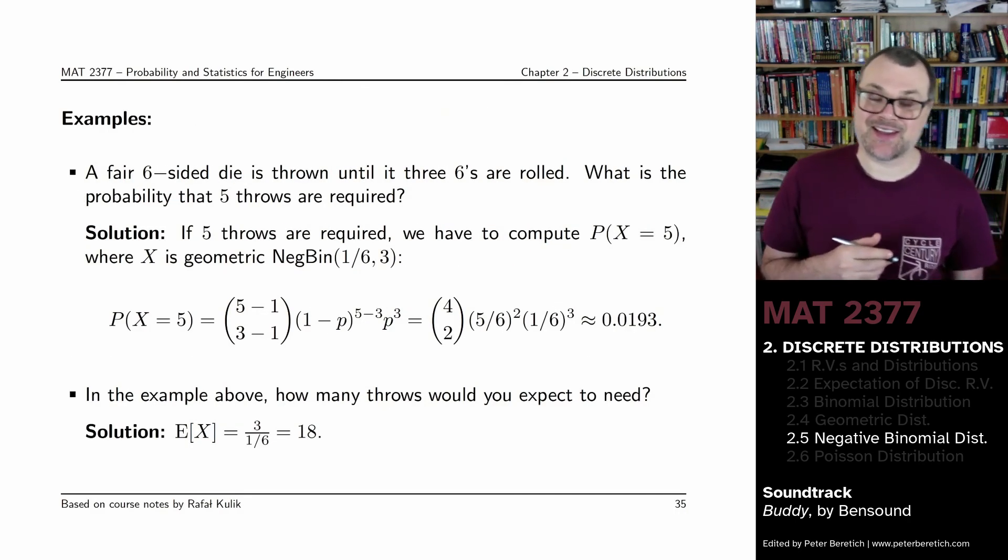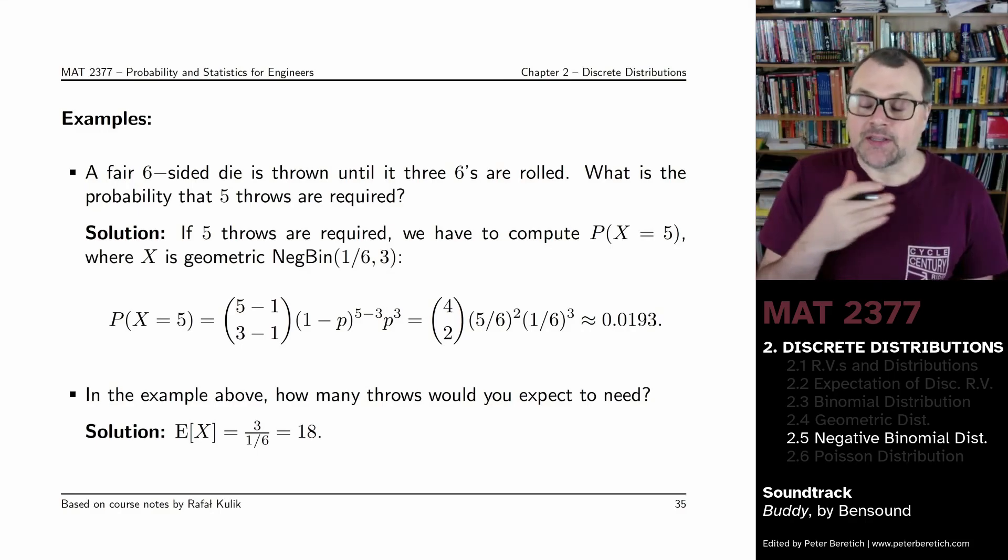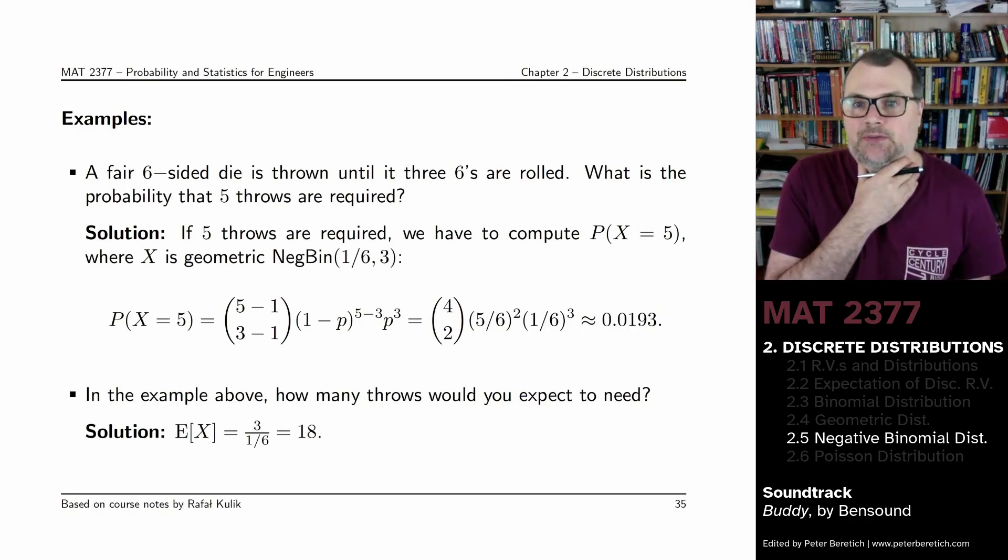So let's go back to the six-sided die example. Let's say you want to throw it until you've rolled three sixes. What's the probability that you will require five throws?